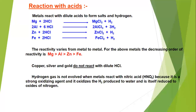If magnesium is treated with dilute hydrochloric acid, it gives magnesium chloride and hydrogen gas. With sulfuric acid, magnesium gives magnesium sulfate and hydrogen gas. Similarly, aluminium reacts with HCl to give AlCl₃ and hydrogen gas. Zinc with HCl gives zinc chloride and hydrogen gas.